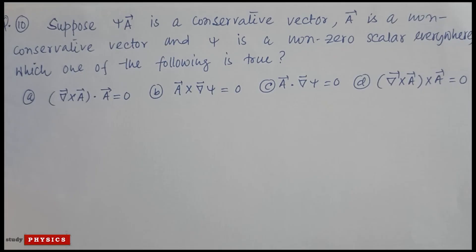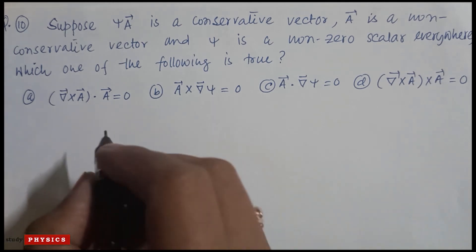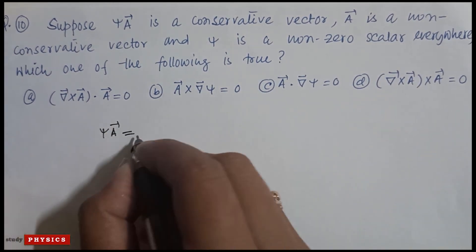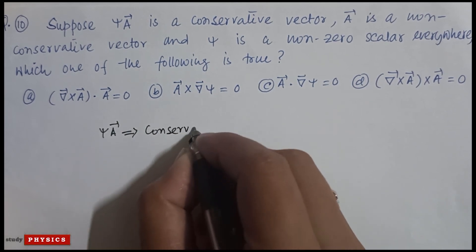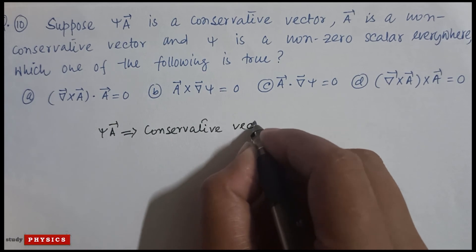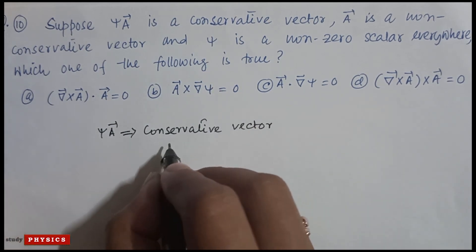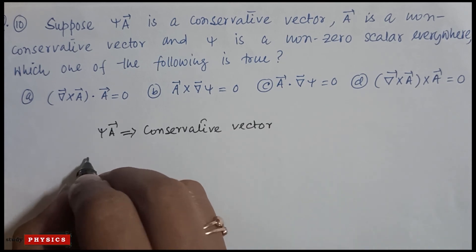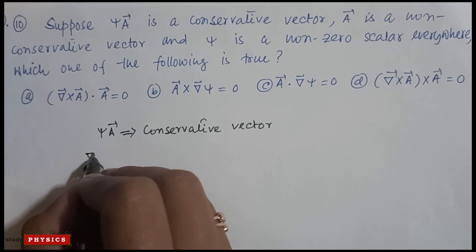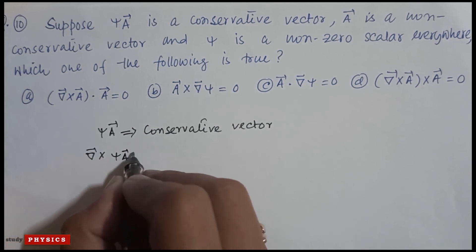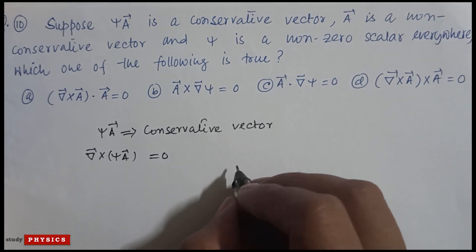Question number ten: suppose ψA is a conservative vector and A is a non-conservative vector, and ψ is a non-zero scalar everywhere. Which one of the following is true? There are four options. Since ψA is a conservative vector, from the property of conservative vectors we can write that curl(ψA) = 0.